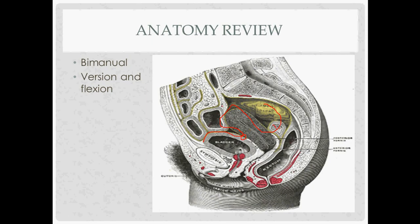The posterior cul-de-sac, or pouch of Douglas, is located posteriorly, with the rectum behind it. For the bimanual exam, which you might be asked to perform before the procedure, the relevant structures are the vaginal opening, cervix, and uterus.